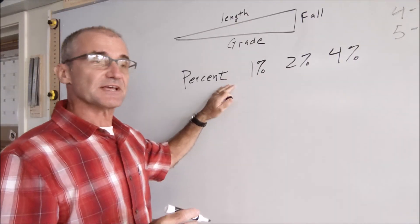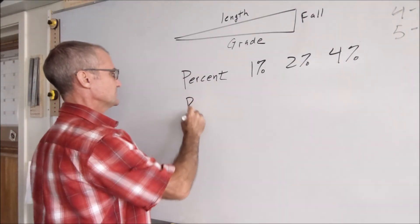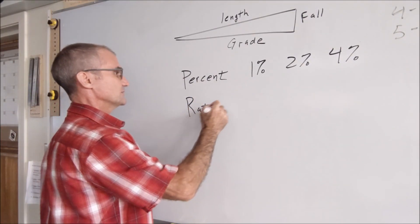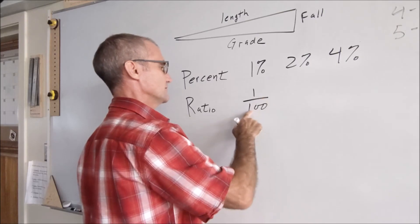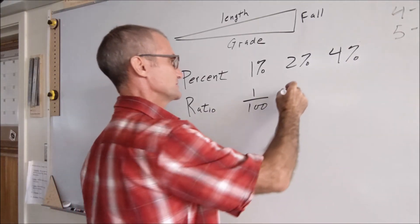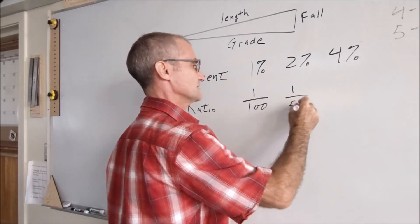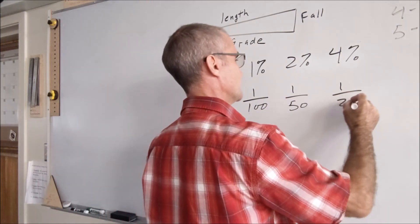Another way to look at it besides a percent is to look at it as a ratio. As a ratio, what you're saying here is it's dropping 1 in 100. Right here you're saying it's dropping 2 in 100, which is 1 in 50. And here you're saying it drops 4 in 100 for 1 in 25.